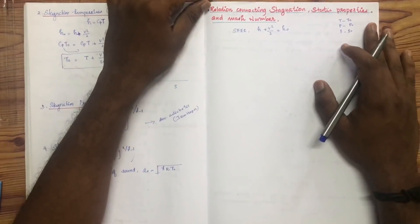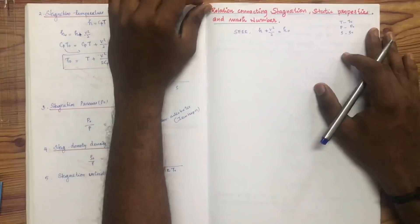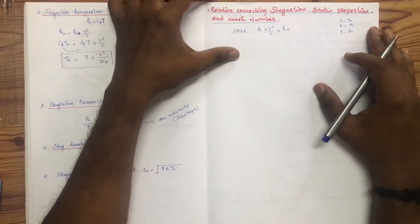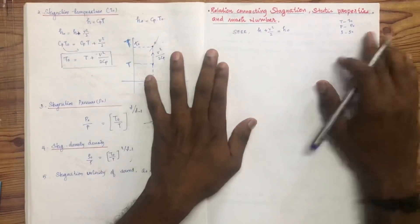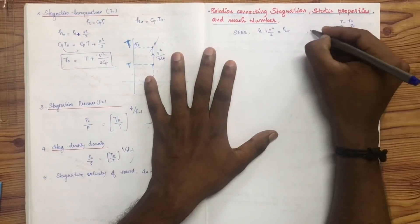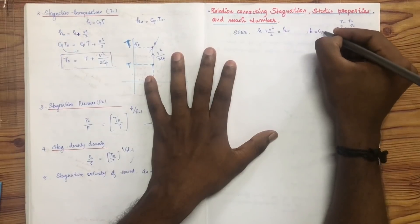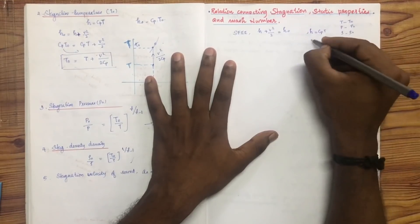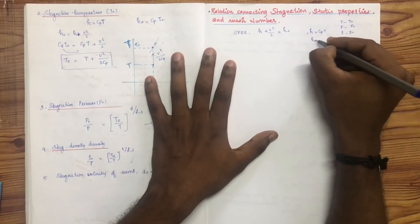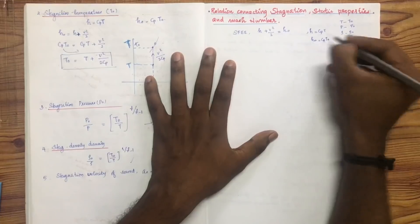This is the first mode of problem. Starting with stagnation and static temperature, we have the steady flow energy equation: H plus V squared by 2 is equal to H0. Since H is equal to Cp times T, we get H0 equal to Cp times T0.